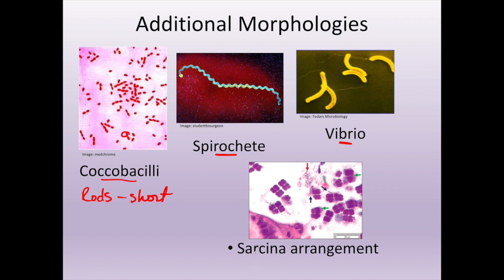Down here we have what's called a sarcina arrangement. This is usually within cocci. These sarcina are where we have a whole bunch of cocci that line up and they usually form these little cubes — they will either be four or eight. So there'll be four of them together and then four more on top, forming a cube-like structure of eight different bacterial cells.